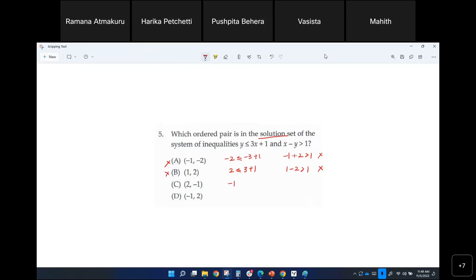So negative one for y. Y is negative one and then three times two is six. So six plus one seems like a correct statement.